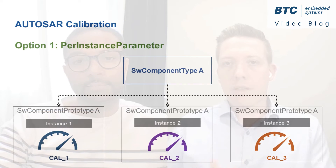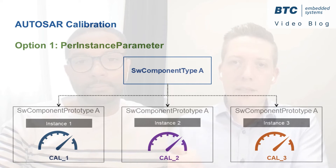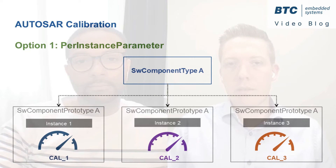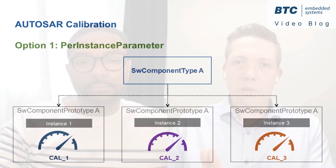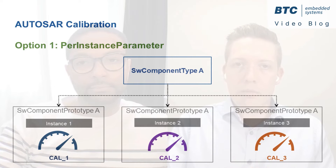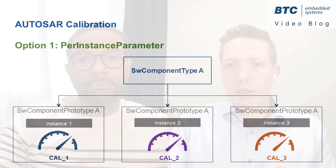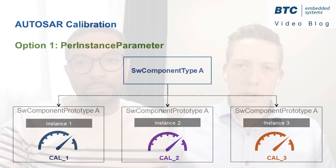The first two options address the calibrations defined internally to the software component type. Option one is that the calibration is defined for a specific instance of the software component type, and this means that each instance has its calibration values managed in a separate memory. The calibration in this case is called per instance parameter.